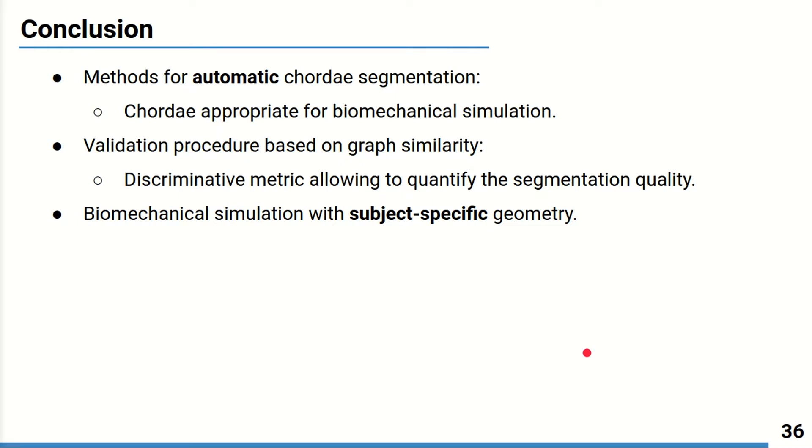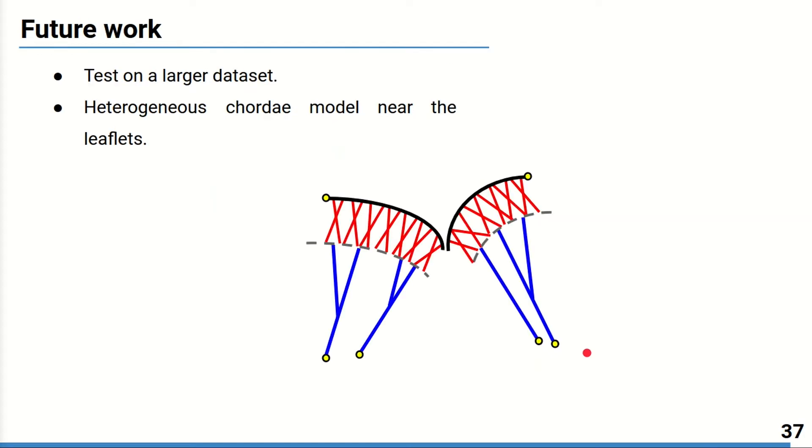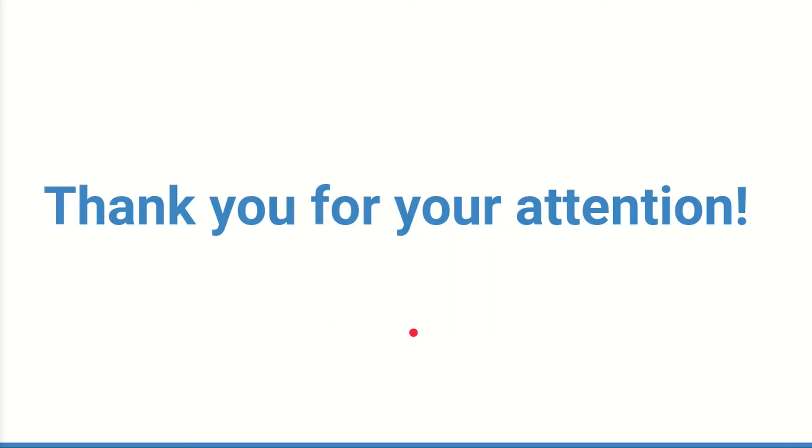The similarity of the obtained results to ground truth indicates that the proposed chordae extraction approach can provide a reliable input for the biomechanical model. In perspective, the results on a larger dataset must be obtained and to improve the chordae modeling in the upper part closer to the leaflets where the detection is disturbed the most, we plan to adapt a heterogeneous chordae model shown here in red while keeping the detection in the lower part displayed here in blue. Thank you for your attention.